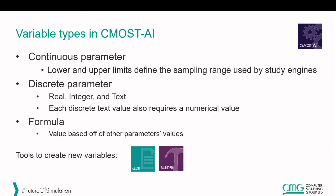We have three main types of variables in CMOS AI. Most commonly used are continuous parameters. In this case we have upper and lower limits for the variable and the optimizer is free to choose any value within that range.